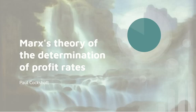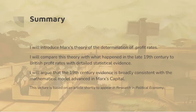This lecture covers the Marxist theory of the determination of profit rates. I'm going to introduce the theory and compare it with what happened in the late 19th century to the British profit rate, using detailed statistical evidence. I'm going to argue that the 19th-century evidence is broadly consistent with the mathematical model in Marxist Capital. The lecture is based on an article shortly to appear in Research and Political Economy, and the full set of statistics will probably take two videos.